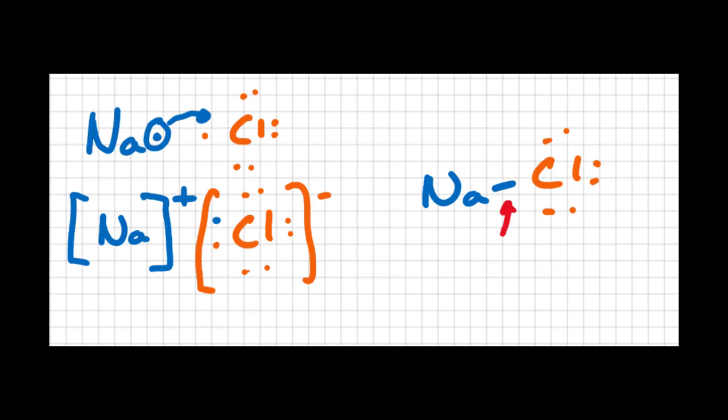That the electrons are being shared back and forth between the sodium and the chlorine. And that's not what happens here. The sodium is losing an electron, the chlorine is gaining the electron, and they bond together because of their opposite charges, not because of a covalent bond.